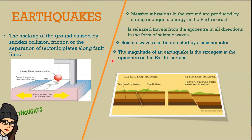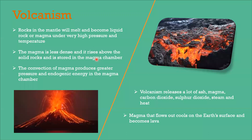Now let's move on to volcanism. The rocks in the mantle will melt and become liquid rock, or magma, under very high pressure and temperature. As magma accumulates, the convection of magma produces greater pressure and endogenic energy in the magma chamber. The magma, being less dense, will rise above the solid rocks and is stored in the magma chamber.